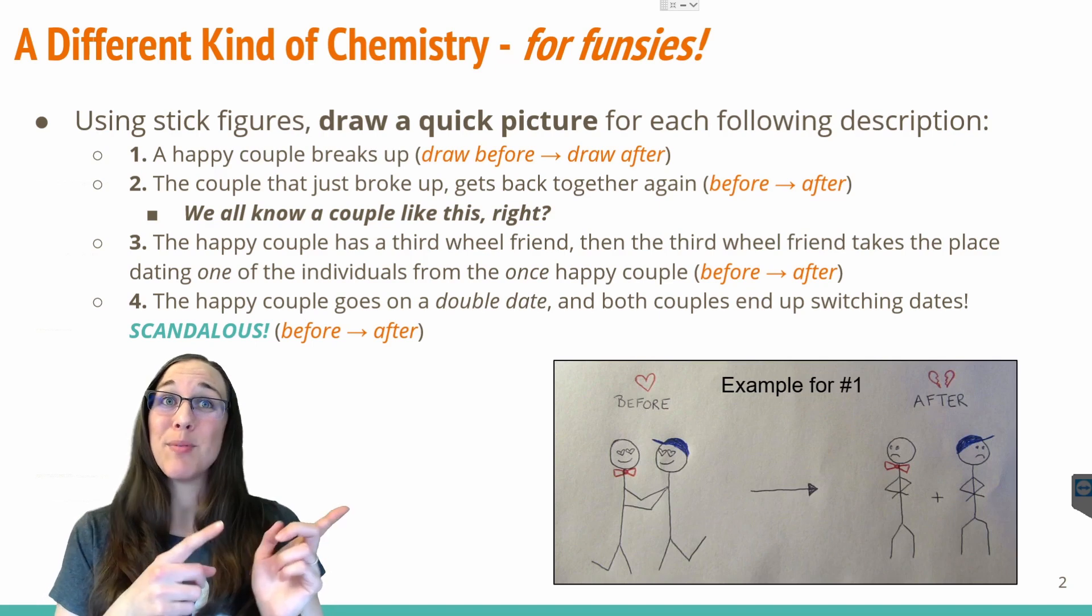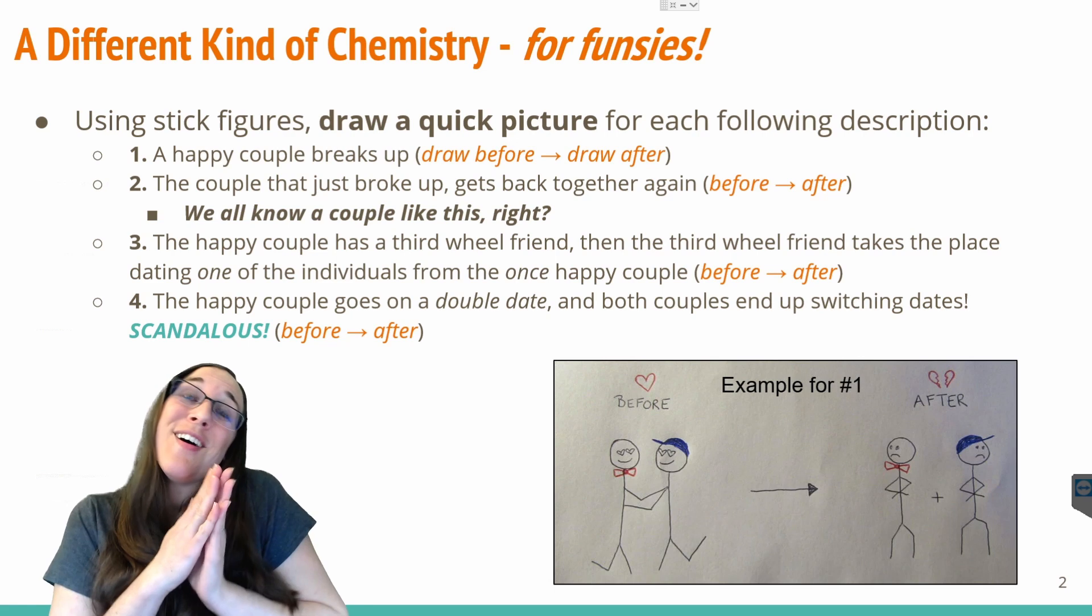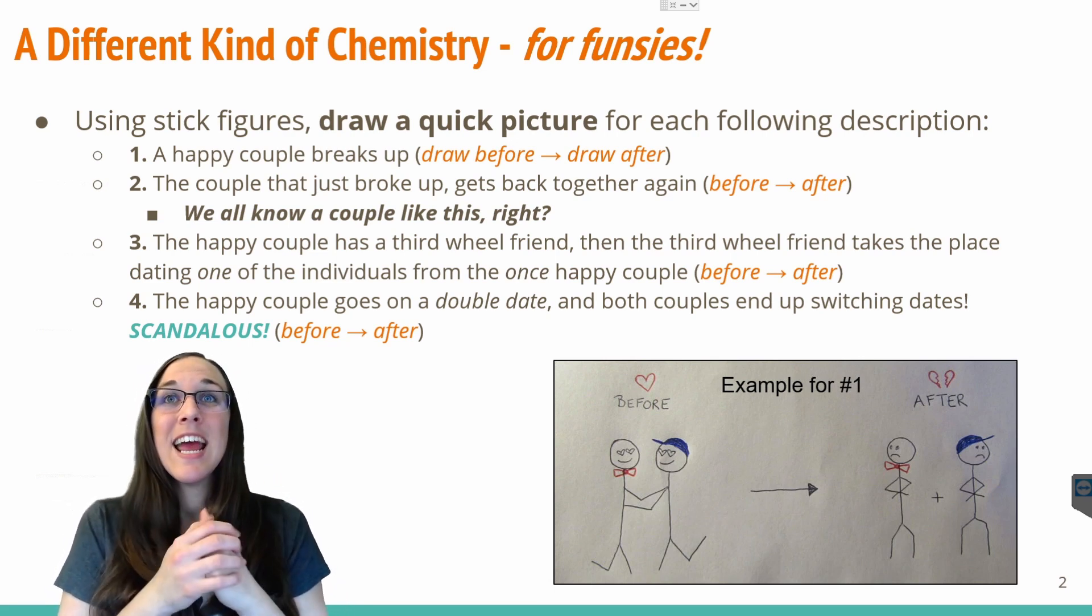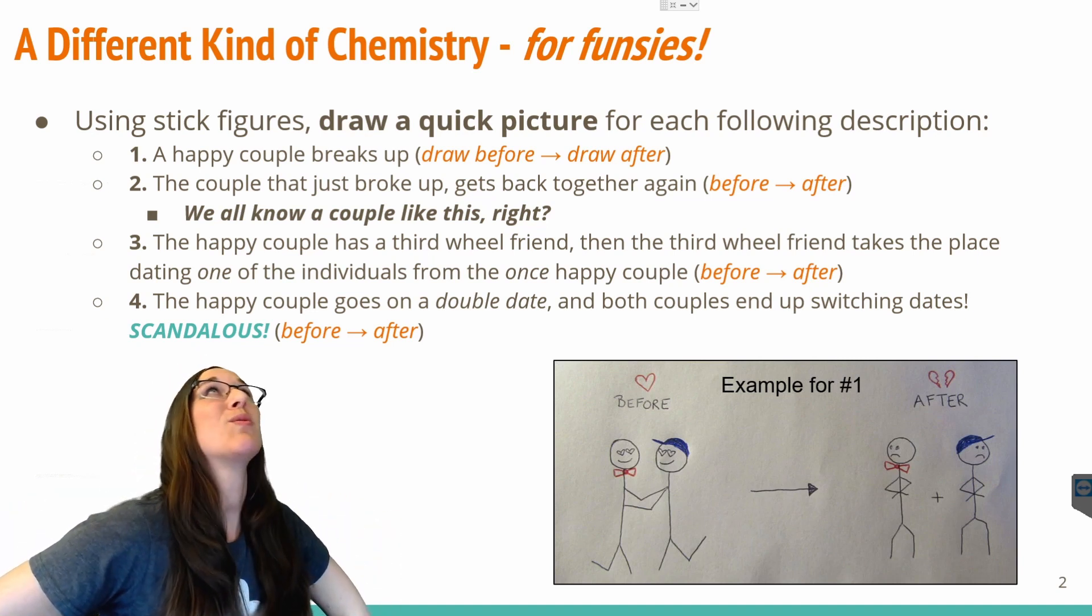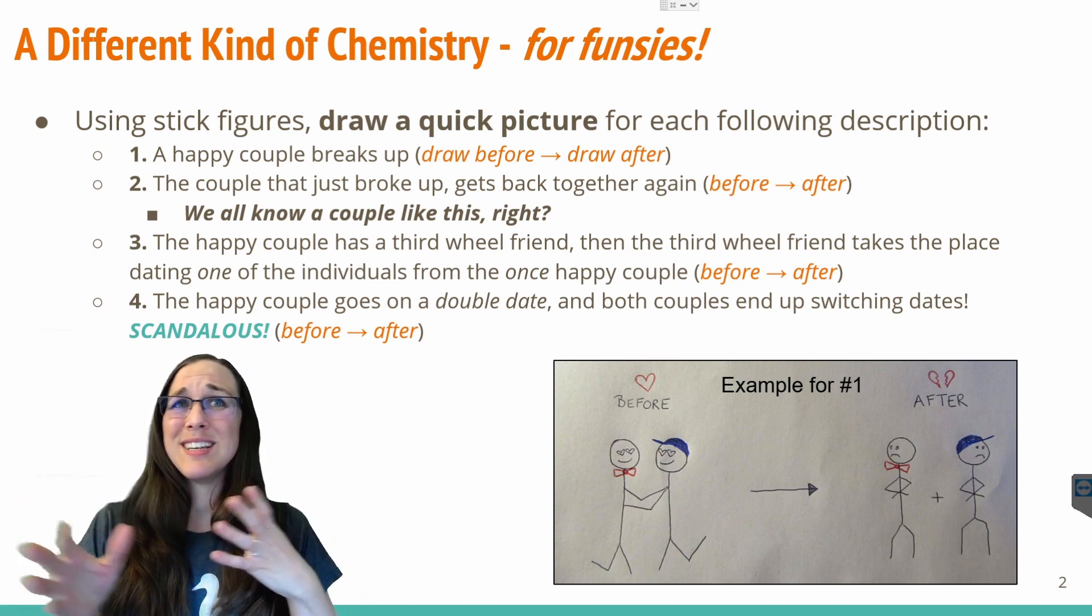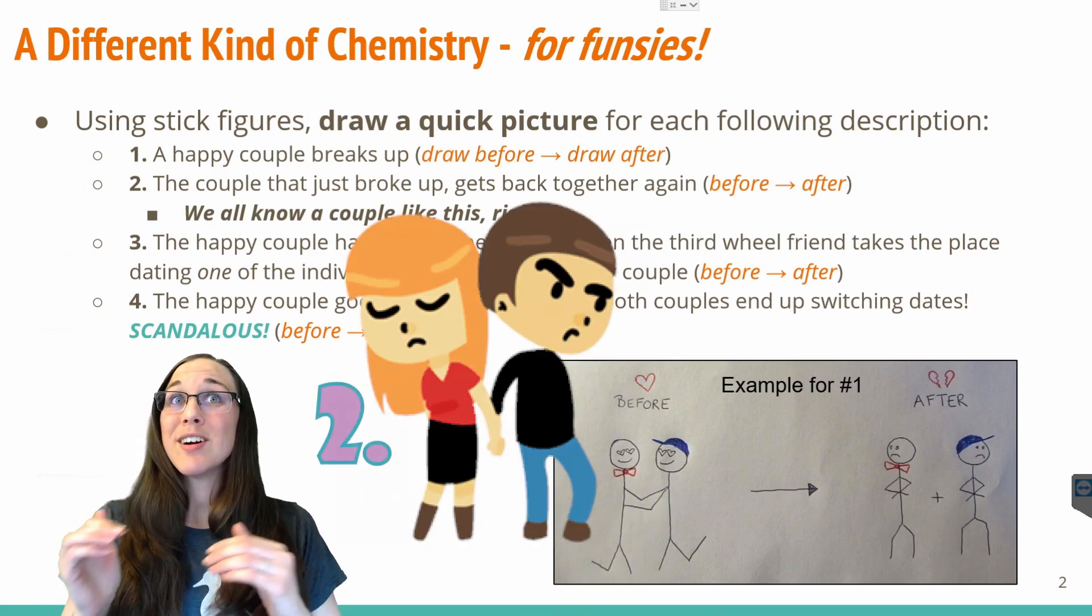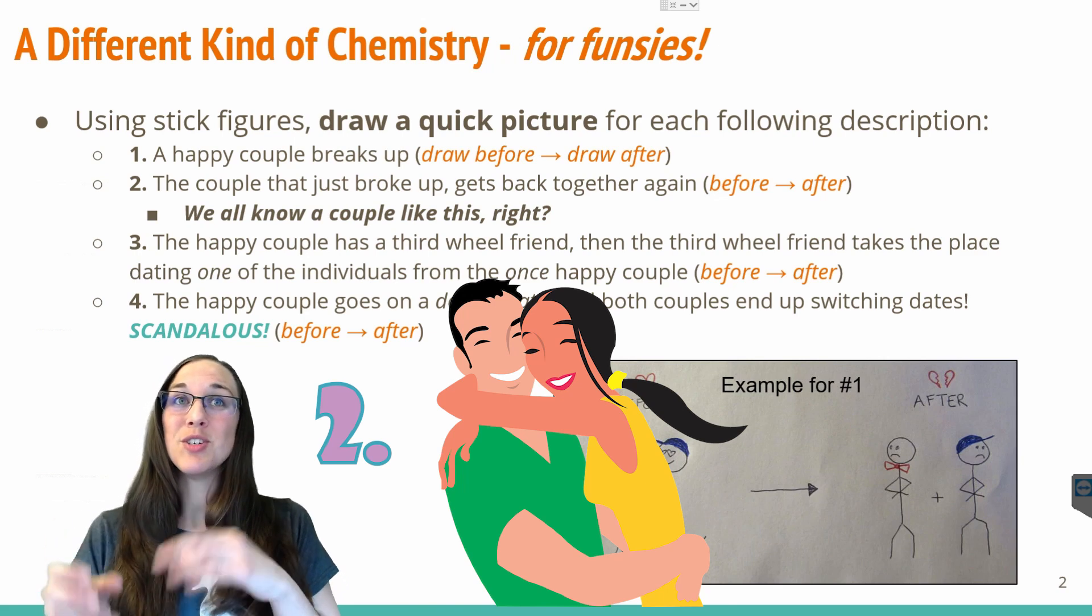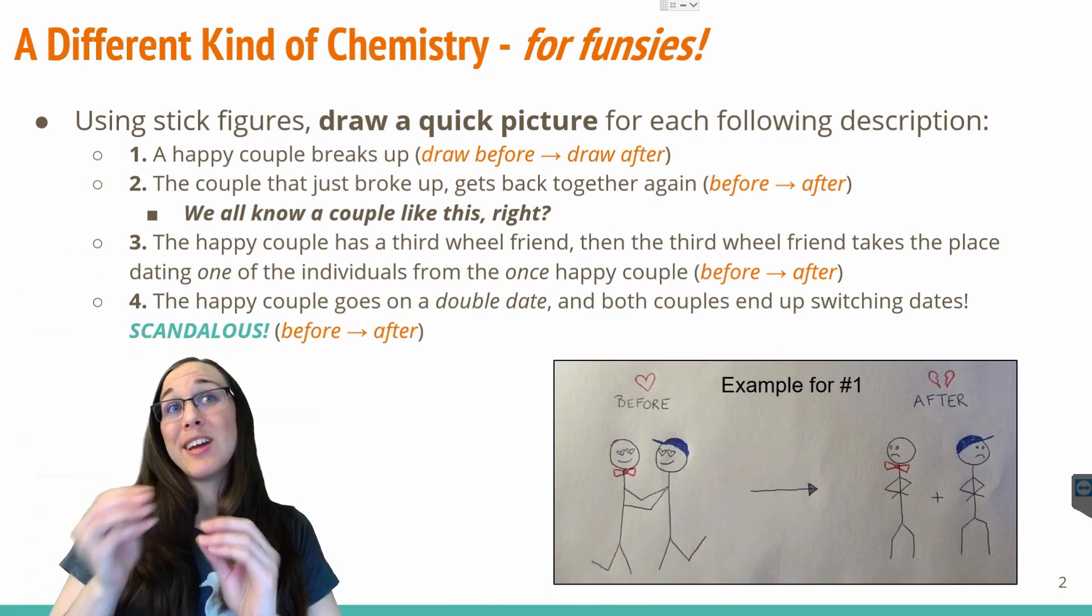My example over there is where you've got the happy little twitterpated couple together. Oh, little heart eyes and everything, and they love each other. And then they break up. So then afterwards, they're both like, I hate your guts. I never want to look at you again. So go ahead and draw whatever scenario you think that would look like. And then a second drawing, label it number two, have a couple that just broke up get back together again. So make sure you show a before and an after of a couple that broke up, and now they're going to get back together again.